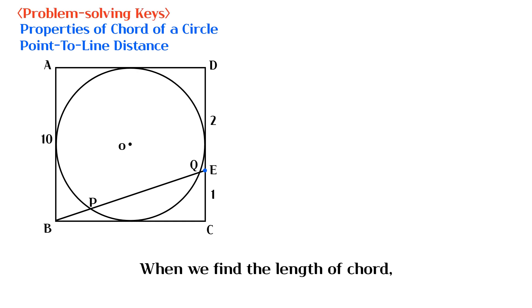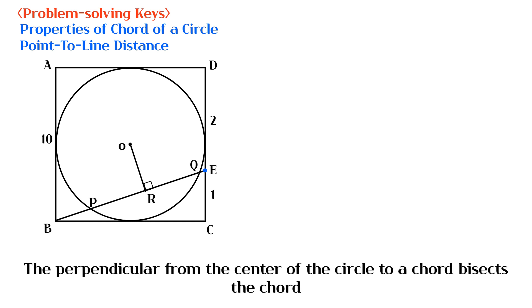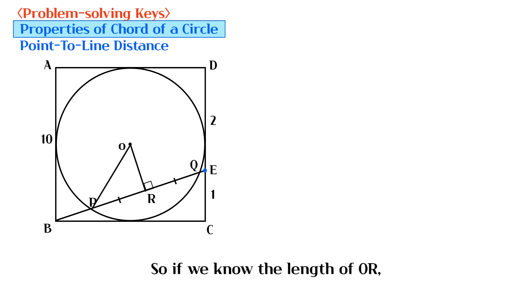When we find the length of a chord, we use the perpendicular distance from the center to the chord. The perpendicular from the center of the circle to a chord bisects the chord. So if we know the length of OR, we can find the length of PQ using the Pythagorean theorem.